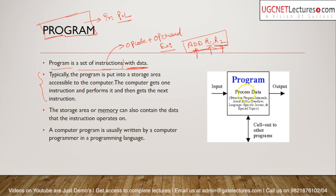A program takes input, processes it, and produces output — it transforms input into output. This execution happens on the machine through the CPU. So through the use of the CPU, a program converts input into output.